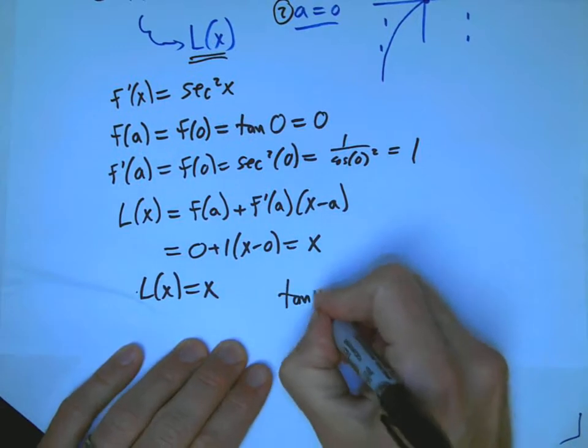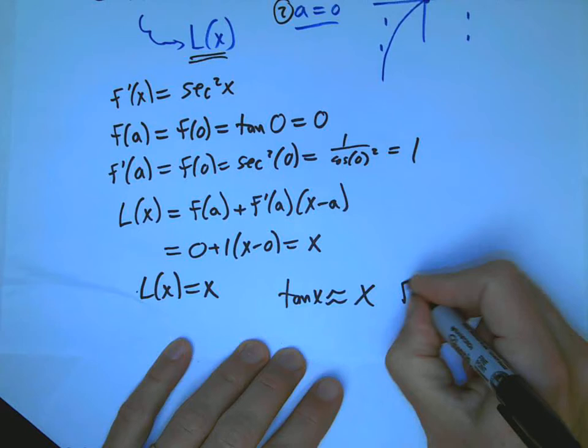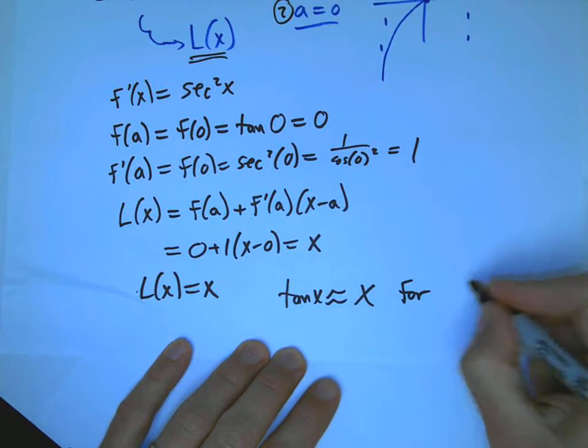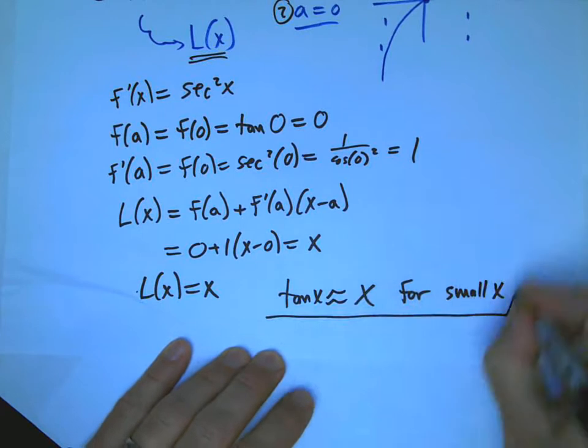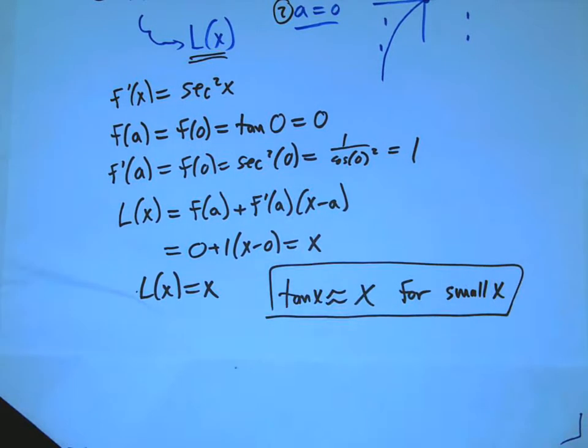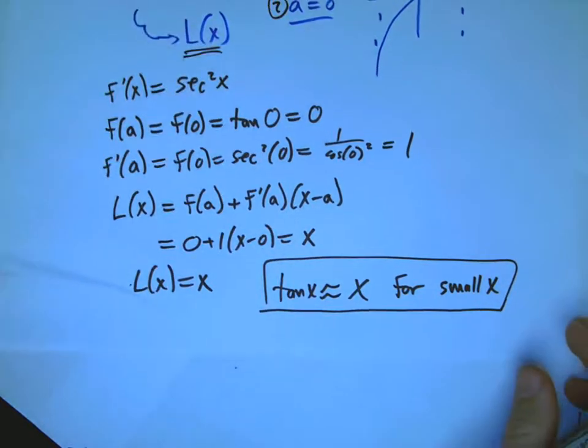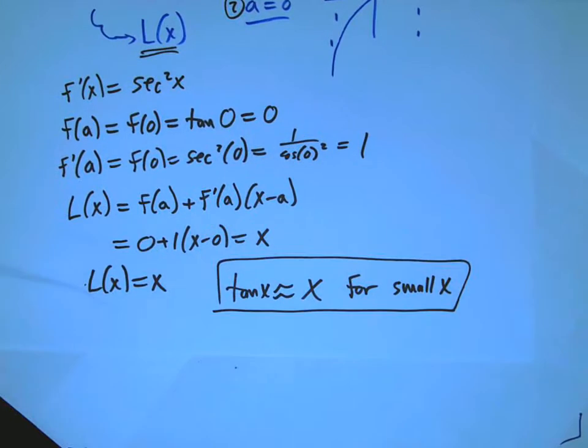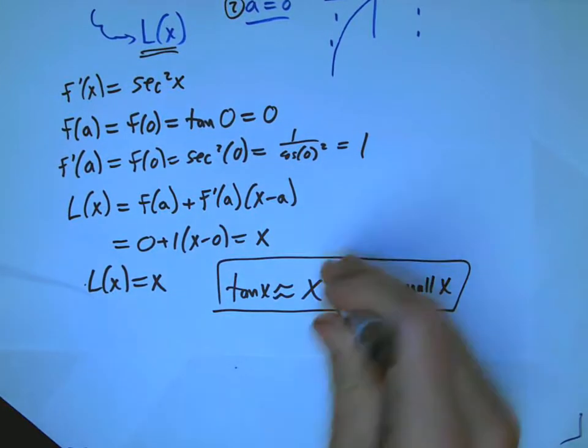The way I like to say it is if you ever want, if you have an engineer building something for you, building a bridge or a rocket or something, ask them to say what is tan x for small x approximately. If they don't say x back within half a second, fire them, please. Really a crucial thing for anybody working and getting an understanding of functions.